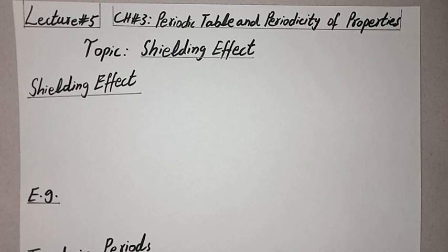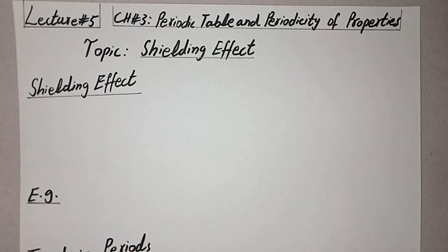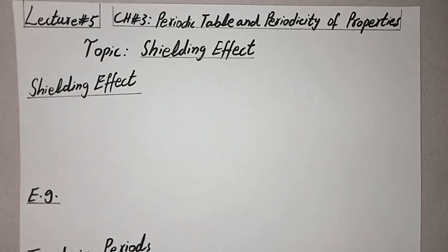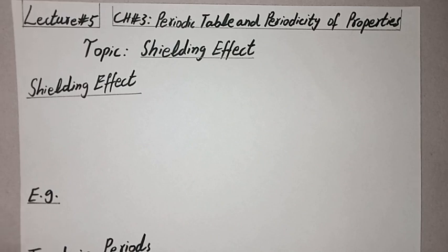The next topic is shielding effect. First of all, we have to know what is shielding effect. As we know, all types of atoms have a nucleus and this nucleus attracts the electrons that are present in shells — that shell can be the first, second, third, or outermost shell. The effect of these electrons is felt by the nucleus everywhere, so the inner electrons experience high charge and the outermost electrons experience less charge.